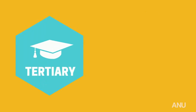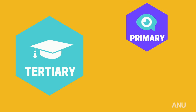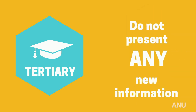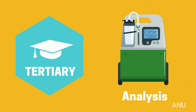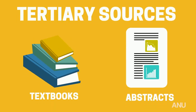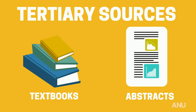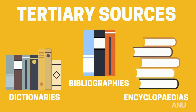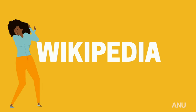Finally, tertiary sources. These are similar to secondary sources in that they include both primary and secondary sources, but the difference is that they do not present any new information, nor do they offer an analysis of information sources. Examples of tertiary source material could include some textbooks, abstracts, and most reference works like dictionaries, bibliographies, and encyclopedias — even, shock horror, Wikipedia.